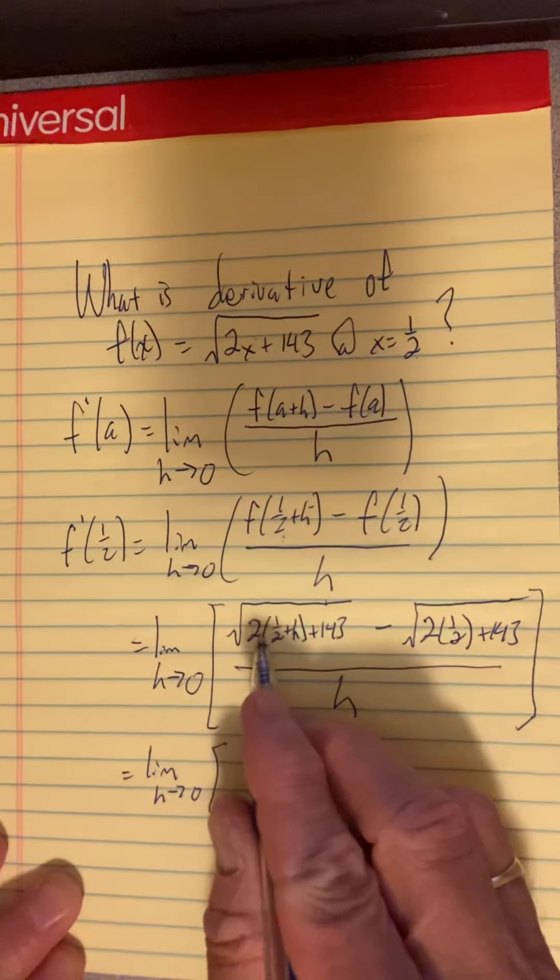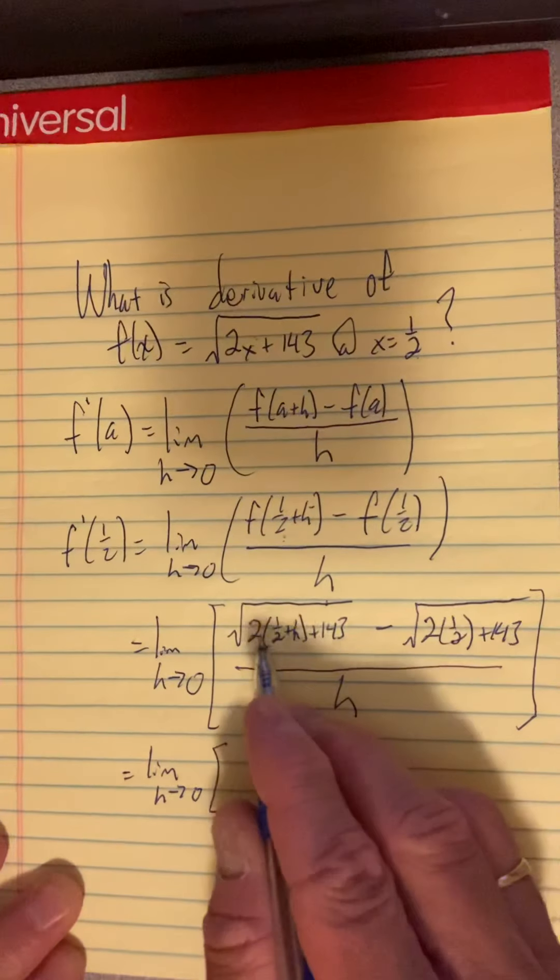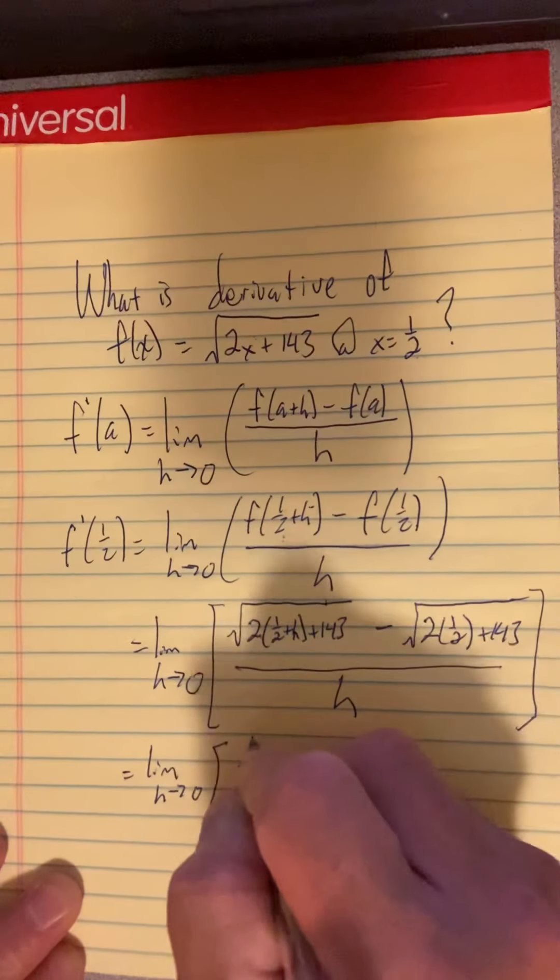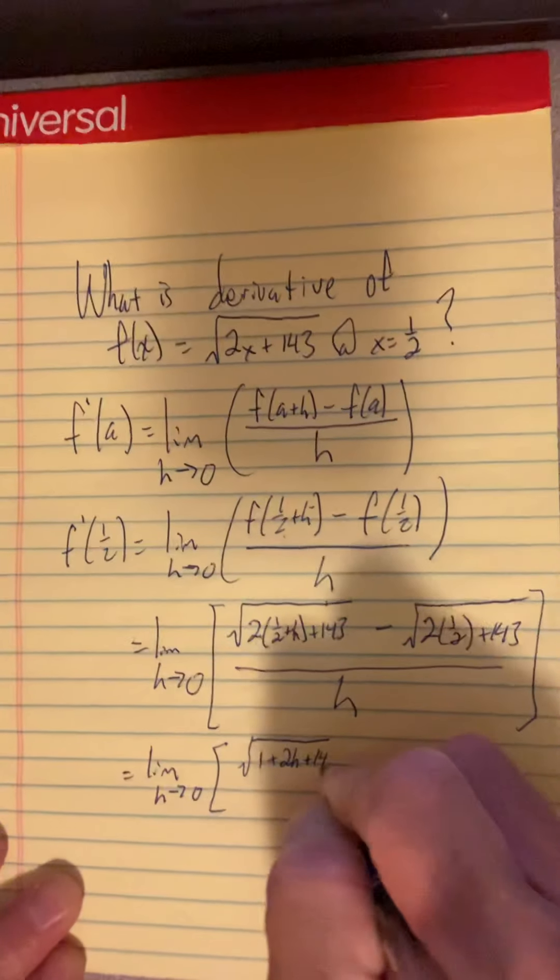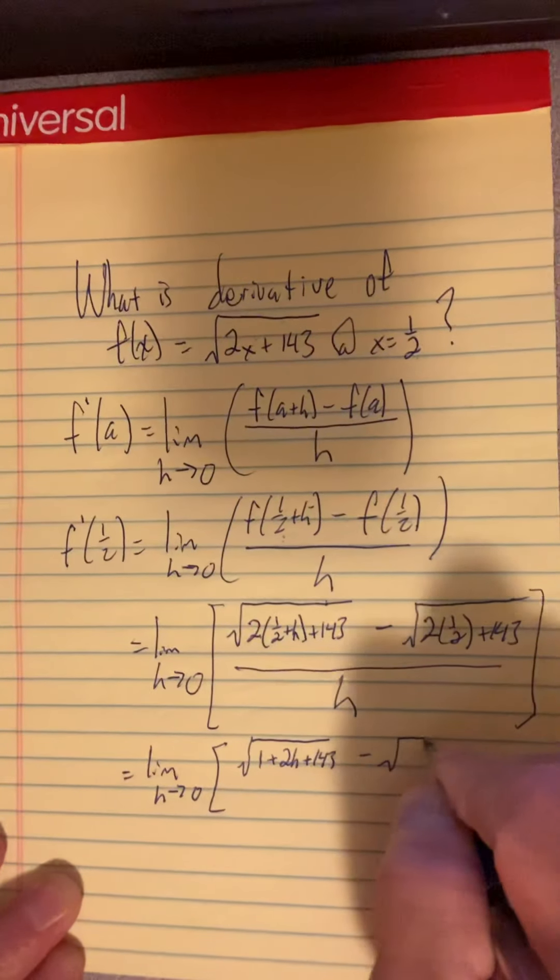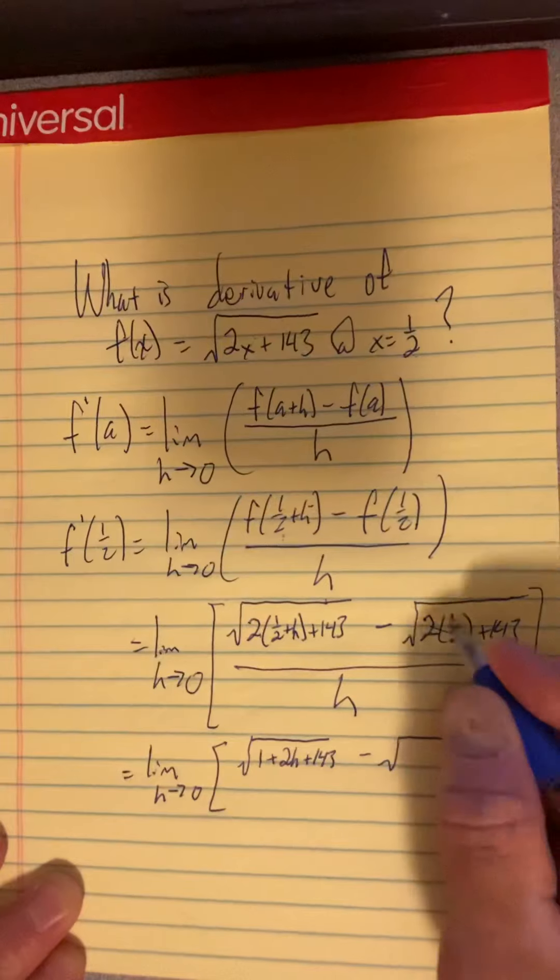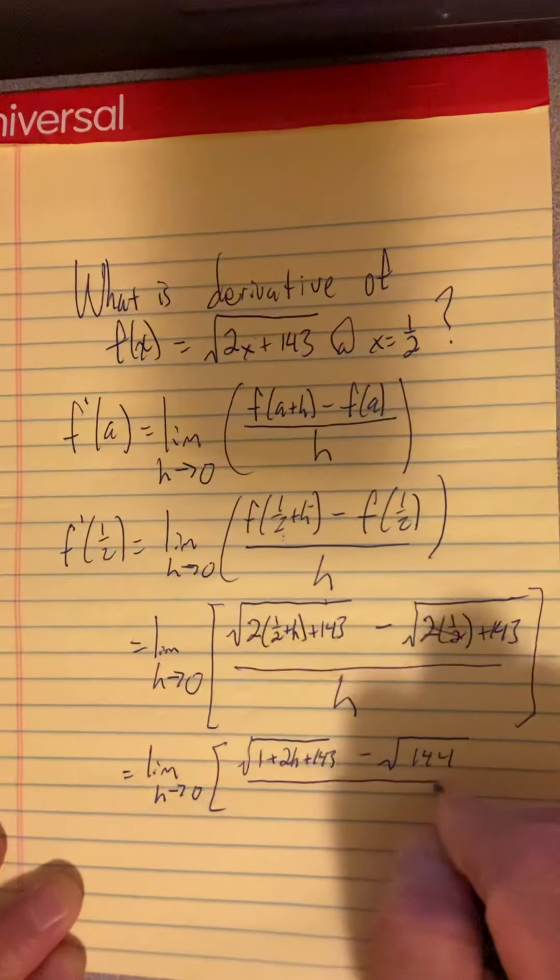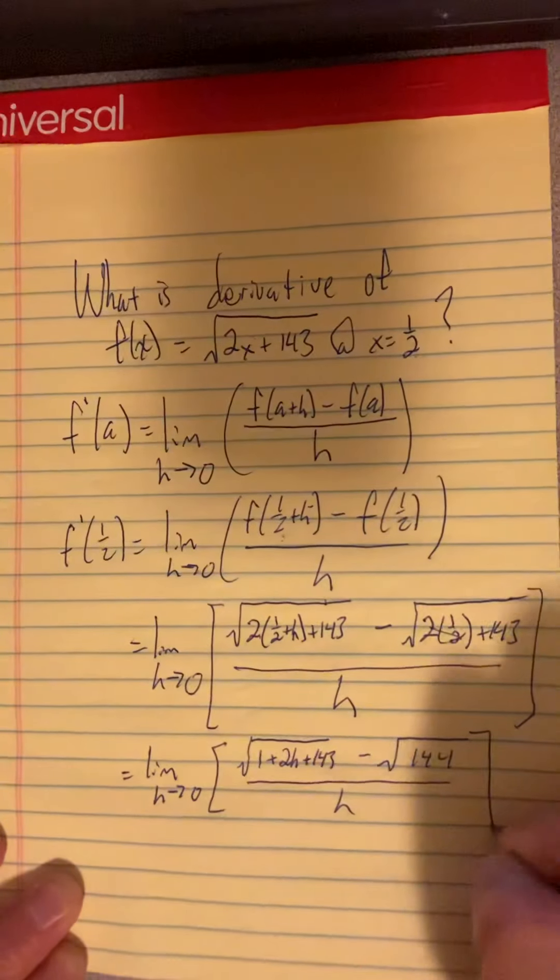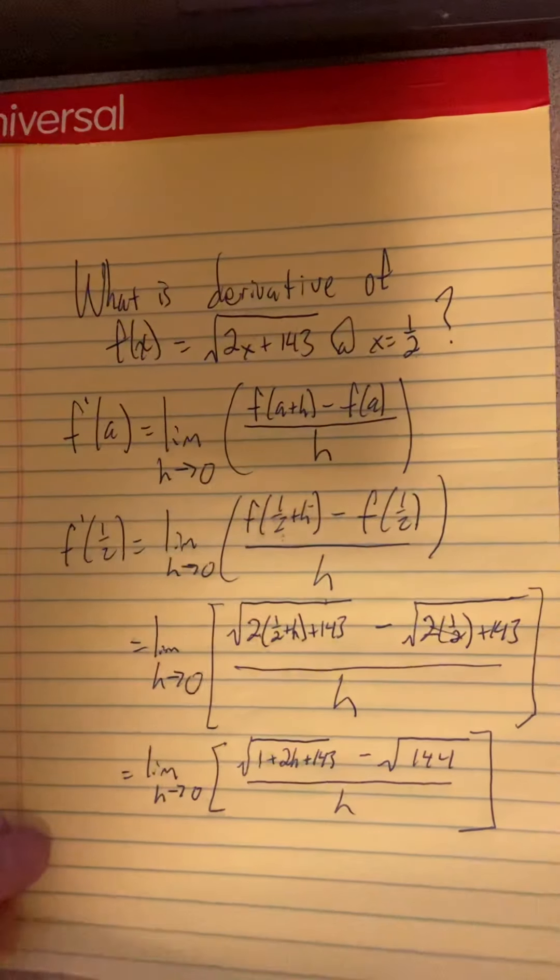Well, I distribute the two. Two times a half is one, and then distribute the two to the h. And I get one plus two h plus 143 minus the square root of, this is a one plus 143 is 144 all over h. So we've gotten that far.